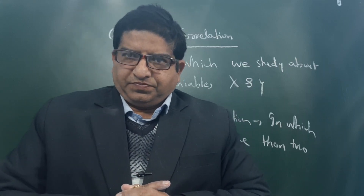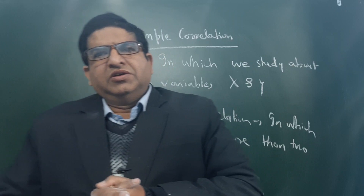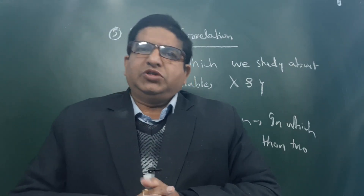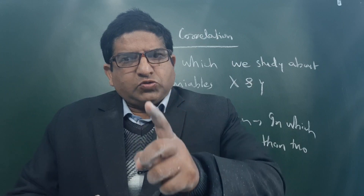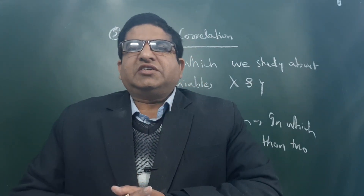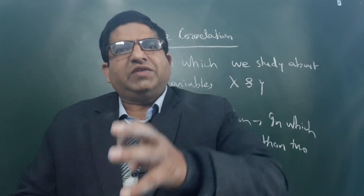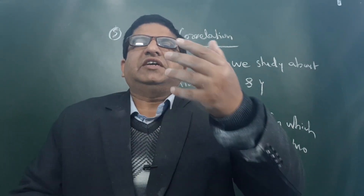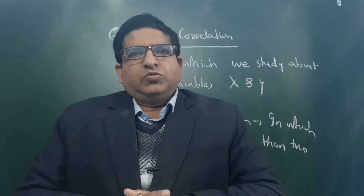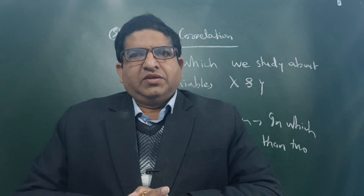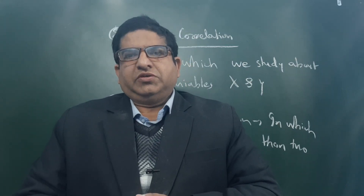So today, students, I have explained correlation and its types. Correlation is the study of the relationship between variables. Positive correlation: two variables move in the same direction. Negative correlation: two variables move in the opposite direction. Linear correlation: variables move in constant proportion. Non-linear correlation: variables do not move in constant proportion. Simple correlation: we study two variables x and y. Multiple correlation: we study three or more variables like x, y, z, or rice, wheat, and climate. This video is important for class 11 CBC, ICC, and those preparing for competitive examinations. Thanks — Dr. Avogna.